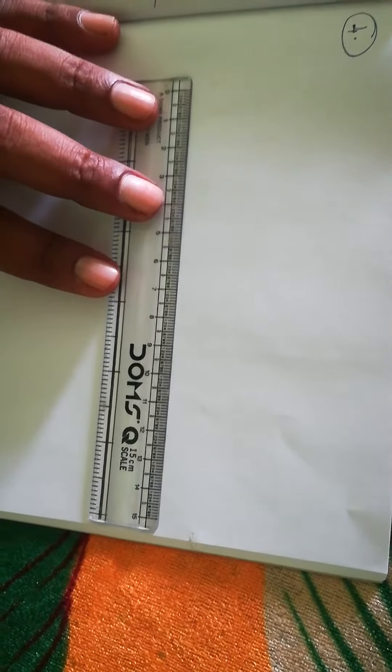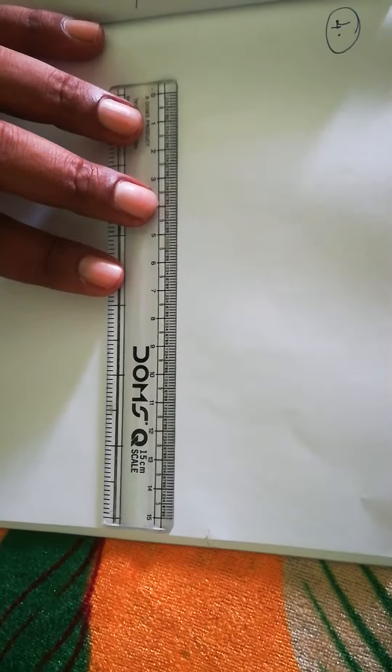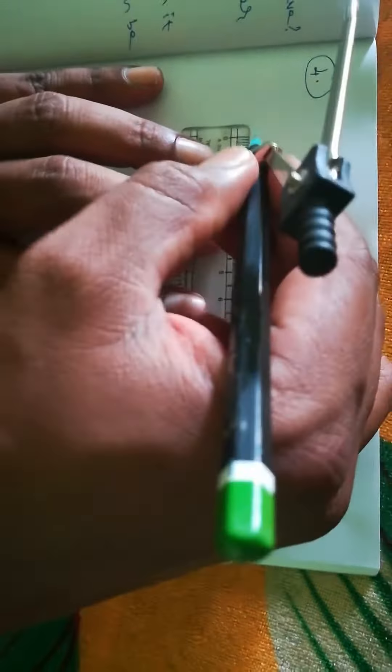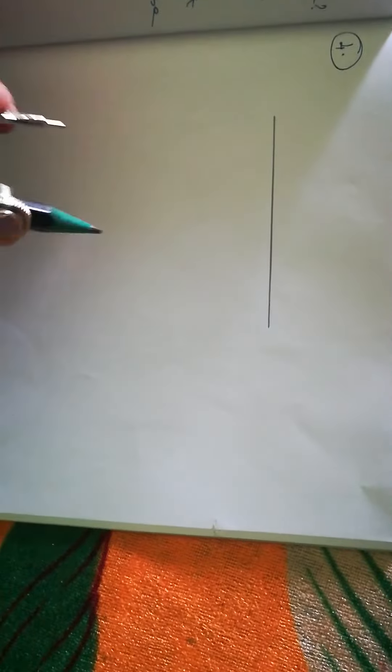Question number four: draw a circle and two lines parallel to the given line such that one is tangent and the other is secant to the circle. So I'm just drawing a line first. We'll just draw a line and we'll draw a circle.